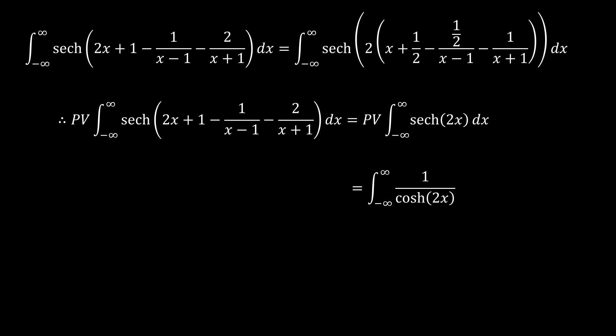So hyperbolic secant is obviously 1 over cosh(2x), or hyperbolic cosine 2x, and hyperbolic cosine 2x is the same as e^(2x) plus e^(-2x) over 2.